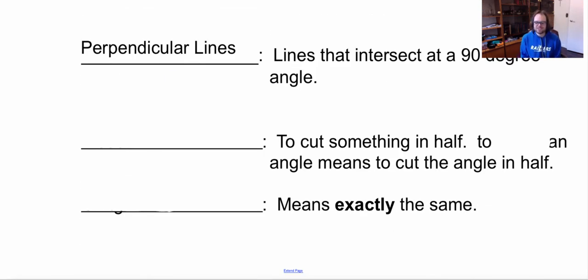So next one is to cut something in half which means to blank an angle means to cut the angle in half. That is to bisect. So to bisect an angle is to cut in half. Now another word for exactly the same so this word means exactly the same it's going to be congruent. So normally when we're talking about shapes and figures we're going to be using the word congruent to mean exactly the same.